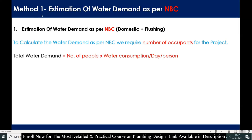As per Method 1, that is as per NBC, what do we exactly need? If you are going with the NBC standard, you need the number of occupants inside the building — this is the only thing required to calculate the demand. The formula is: total water demand equals number of people multiplied by water consumption per day per person.